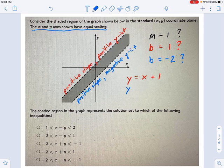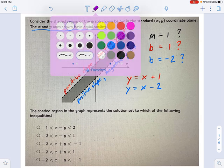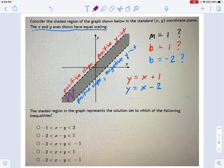And the second one looks like it's going to be something like x minus 2. And we have to figure out some way of describing the shaded area between those dotted lines, all this stuff in here.